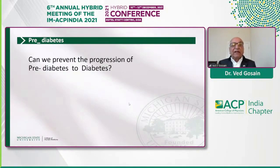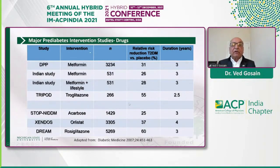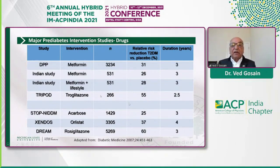Can we prevent the progression of prediabetes to diabetes? The answer is yes. There are several randomized controlled studies looking at lifestyle modifications to prevent progression. We'll talk briefly about the Diabetes Prevention Program and the Indian study. There are also multiple studies looking at drugs — metformin, troglitazone, and others — as interventions, but we're not going to talk much about those mainly due to lack of time.